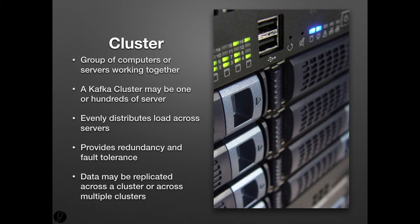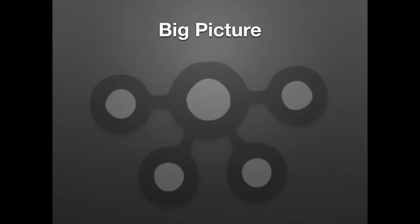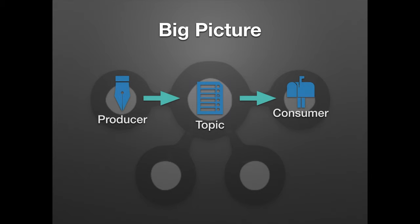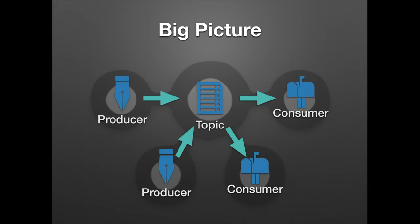Kafka is redundant and extremely durable. Kafka achieves this by distributing load across many servers or even many data centers. Each of these groups of servers is referred to as a Kafka cluster. If a server fails, the remaining systems of a cluster can still uphold the entire system. Now that we understand these five main components of Kafka, let's take a look at how they all work together to form Kafka as a whole.